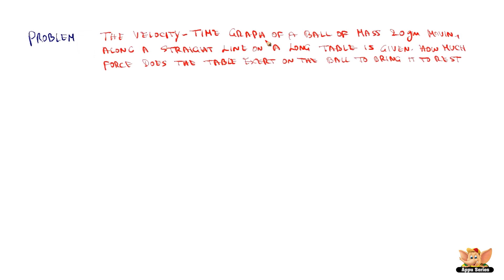The velocity-time graph of a ball of mass 20 grams moving along a straight line on a long table is given. How much force does the table exert on the ball to bring it to rest? And the graph given here is y axis velocity and x axis time in seconds, velocity in cm per second. So you have 1 to 10, and scaling 5. Now let's find out what is the force. In order to find the force exerted on this object, let us see what are the given data.